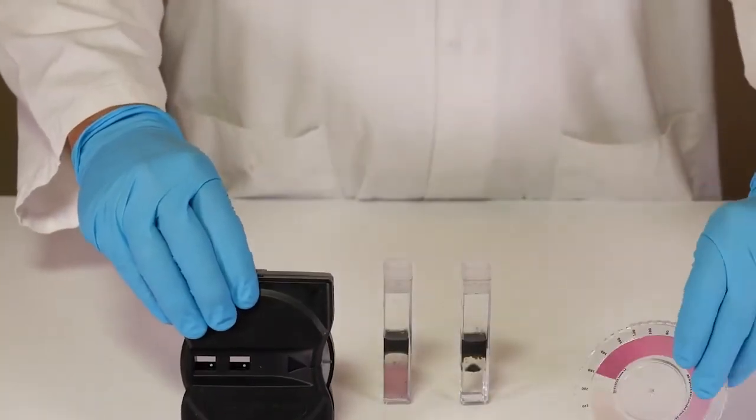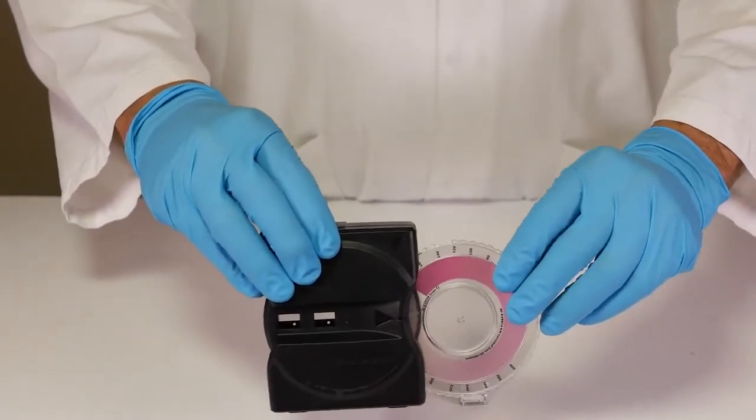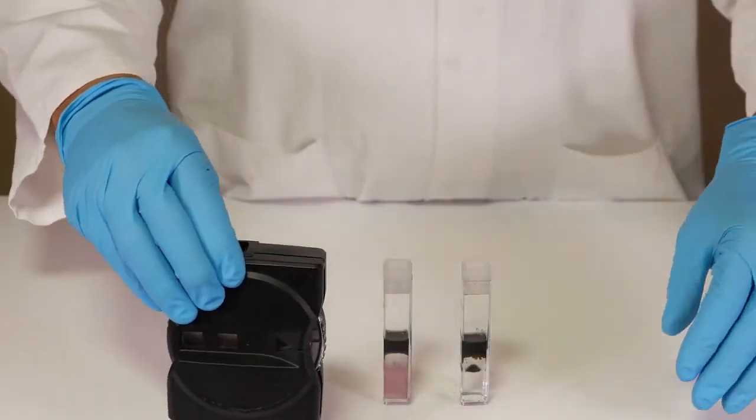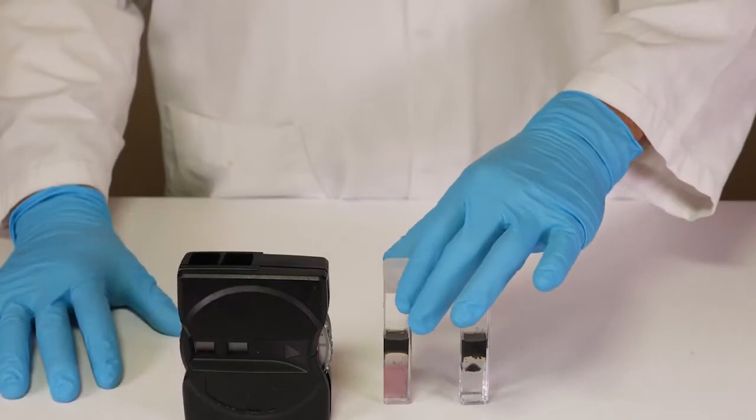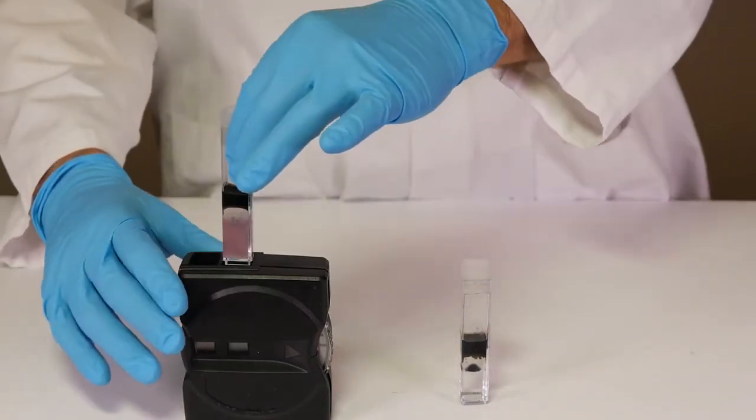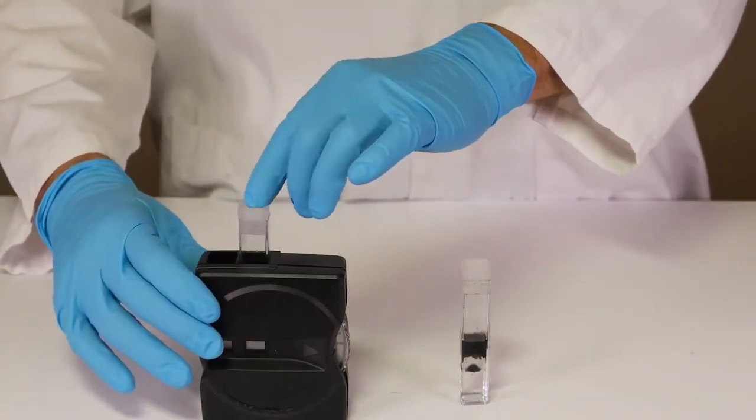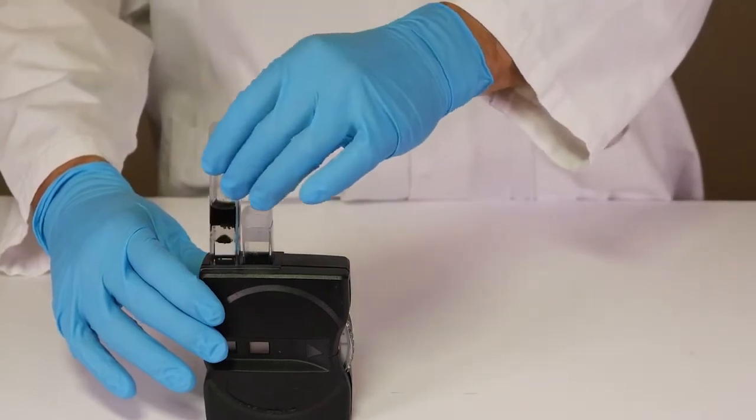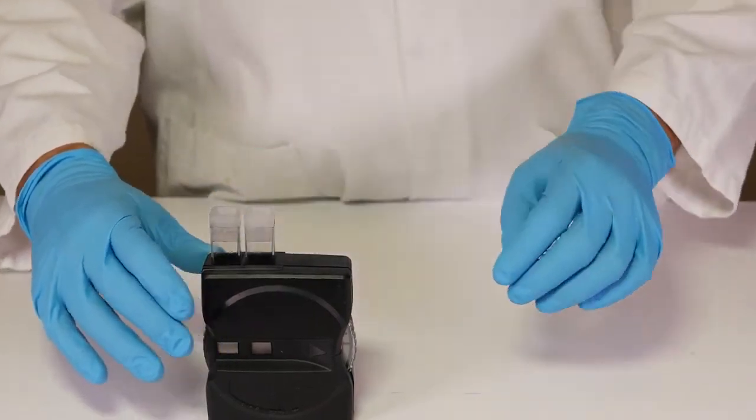Insert the colour wheel into the comparator. Place the cuvette containing reagent two into the center most slot and the cuvette with reagent three into the outermost slot.